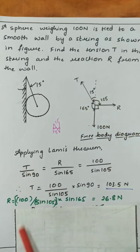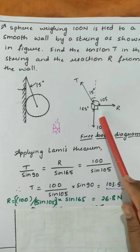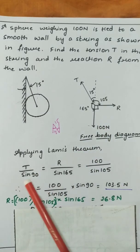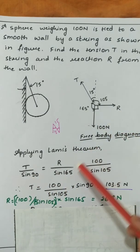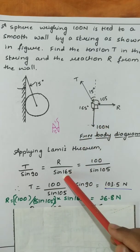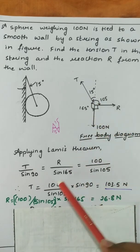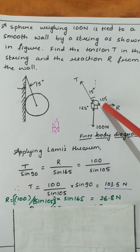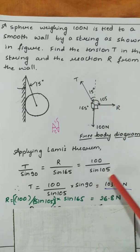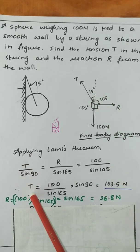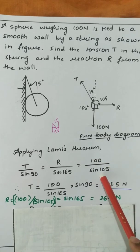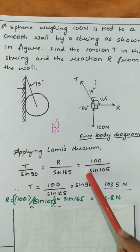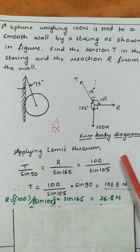Applying Lamy's theorem: T divided by sin 90 (angle between R and 100 N is 90°), and R divided by sin 165 (angle between T and 100 N), is equal to 100 divided by sin 105 (angle between T and R). So we get T equal to 100 divided by sin 105, multiplied by sin 90.